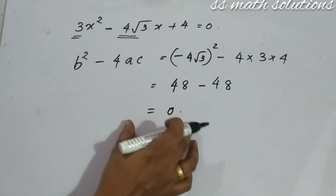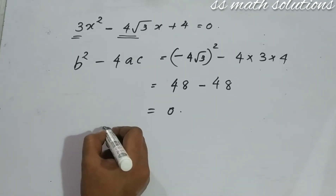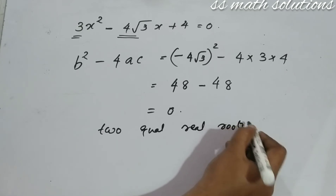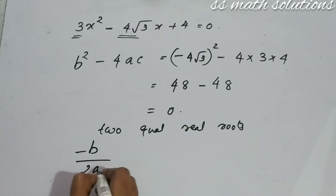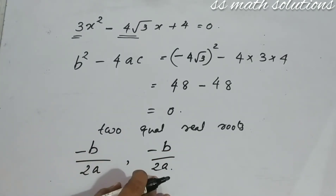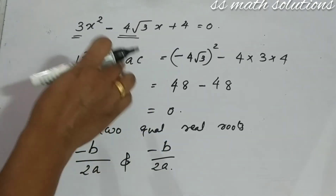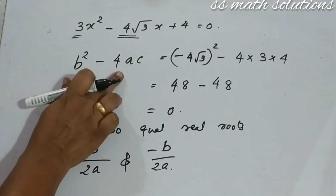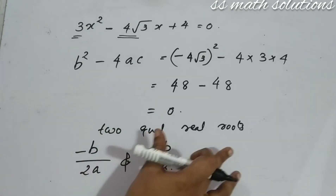B squared minus 4AC equals zero, so real roots exist — specifically two equal real roots. Two equal real roots means both roots are the same, and the solution is minus B by 2A. If B squared minus 4AC is less than zero: no real roots. If B squared minus 4AC equals zero: two equal real roots. These are confirmed by this example.